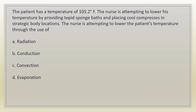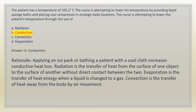The patient has a temperature of 105.2 degrees Fahrenheit. The nurse is attempting to lower his temperature by providing tepid sponge baths and placing cool compresses in strategic body locations. The nurse is attempting to lower the patient's temperature through the use of: A. Radiation. B. Conduction. C. Convection. D. Evaporation. Answer: B. Conduction. Rationale: applying an ice pack or bathing a patient with a cool cloth increases conductive heat loss. Radiation is transfer of heat from one surface to another without direct contact. Evaporation is the transfer of heat energy when a liquid is changed to a gas. Convection is the transfer of heat away from the body by air movement.